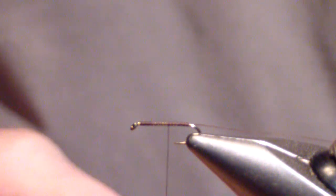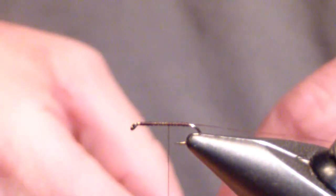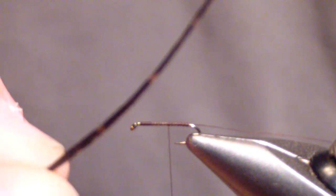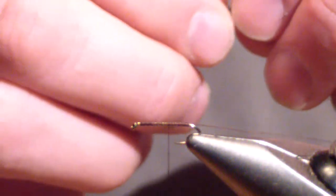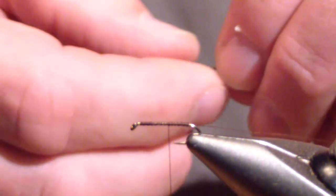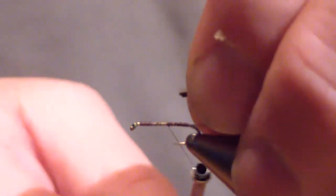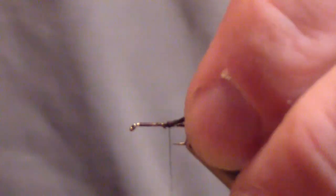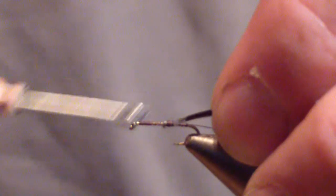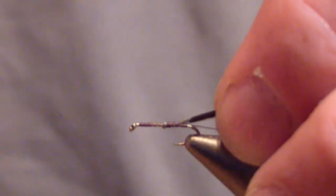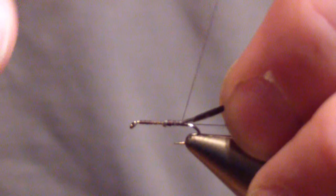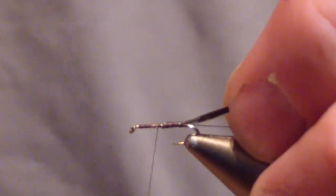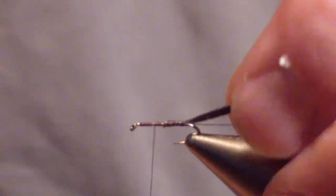At this point you're going to tie in three mottled turkey tail fibers. I tie in butt first because I want the rear end of the abdomen to be slightly larger as a natural caddis pattern is. Caddisfly tapers forward. Then bring your thread, once you tie that in, bring your thread up to the two-thirds point.